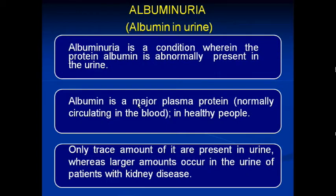Apart from proteinuria, a specific categorization is albuminuria, which means albumin in urine. Albumin is the most important protein present in our body and is a major plasma protein normally circulating in the blood. Only trace amounts of albumin are present in urine in healthy people, whereas large amounts occur in the urine of patients with kidney disease who excrete more albumin due to kidney malfunction.